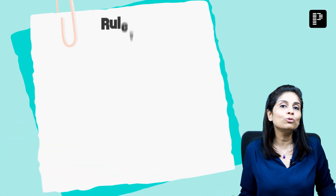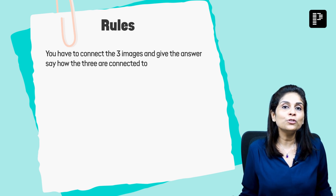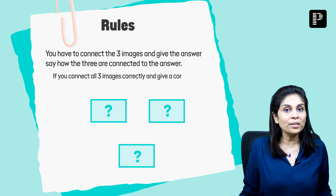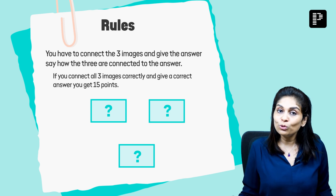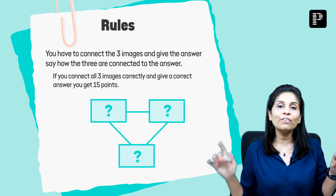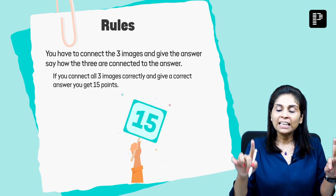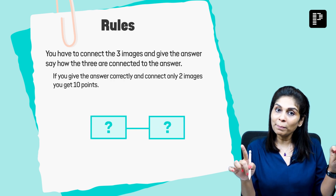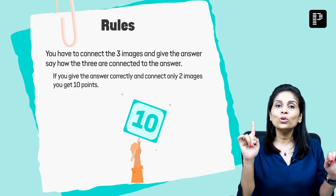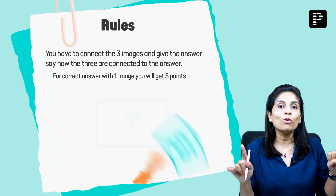Let's first check the rules of the Connect round. The rules are very simple. I will be showing you three images based on must-know processes, must-know phenomena, or must-know disorders. All you're expected to do is connect those three images and find out the right answer, in which case you get 15 points. If you can connect only two images, you get 10 points. If you connect only one image, you get 5 points.